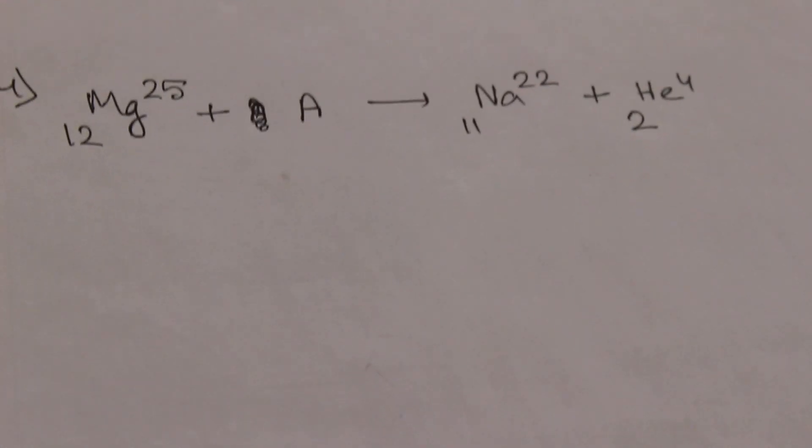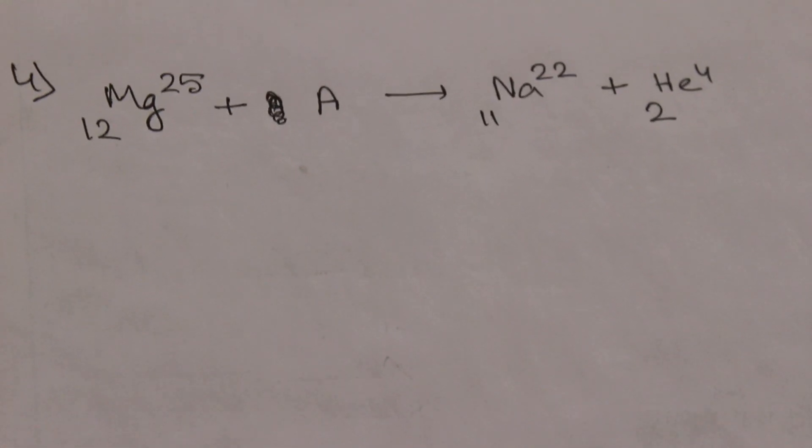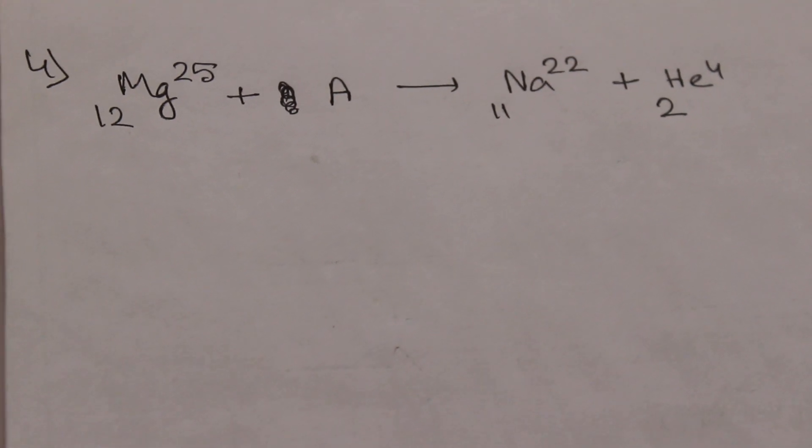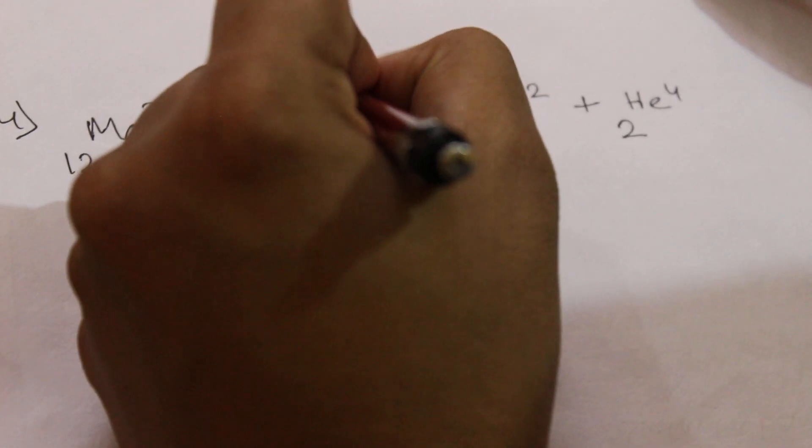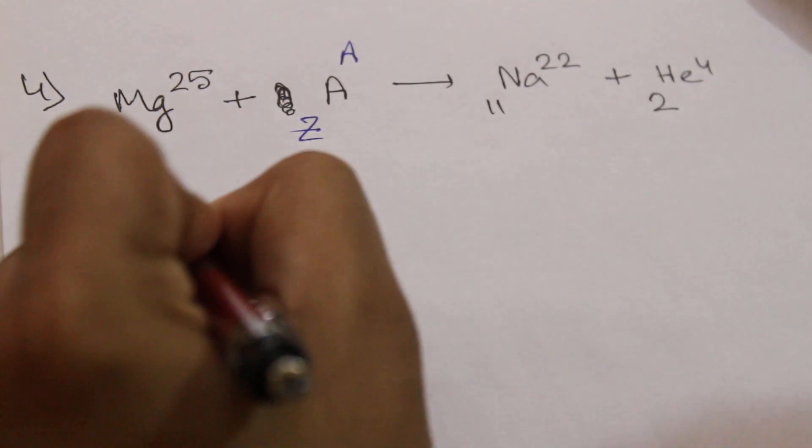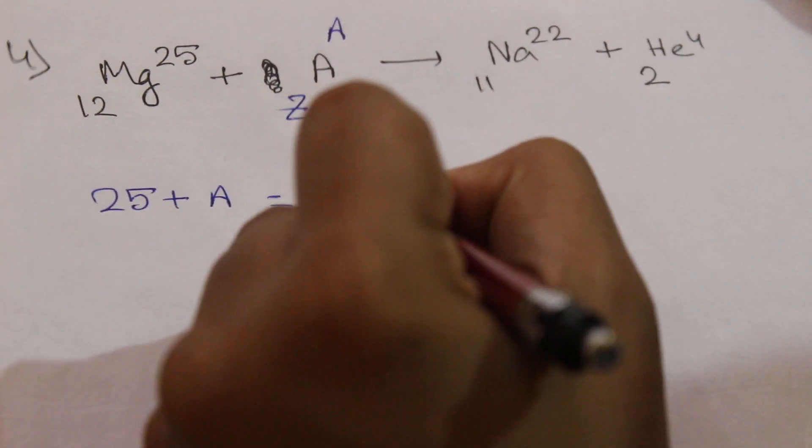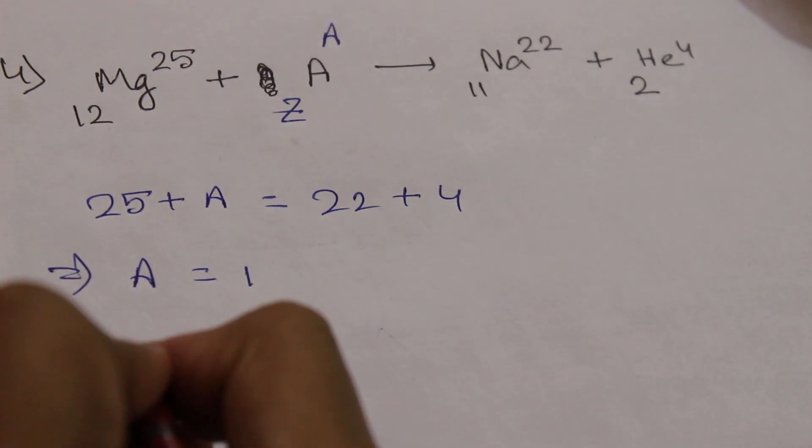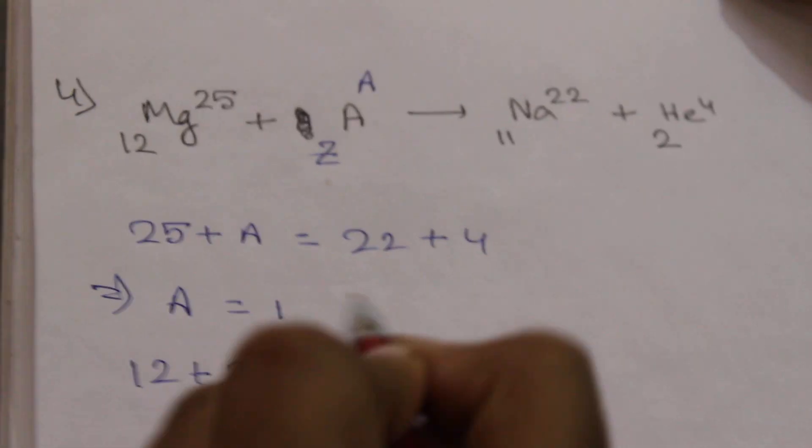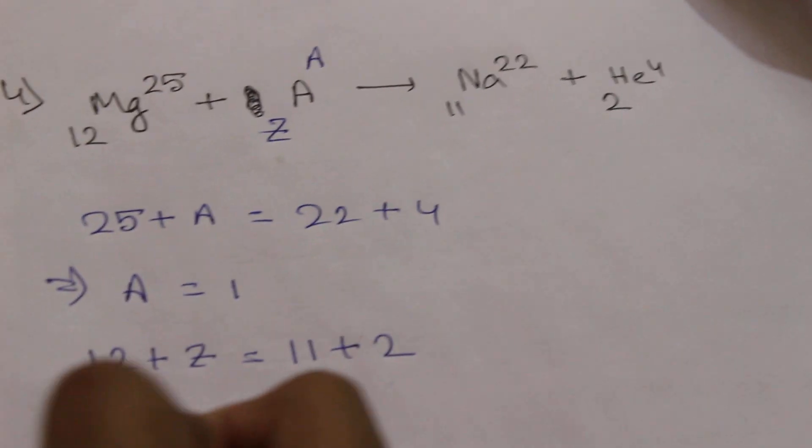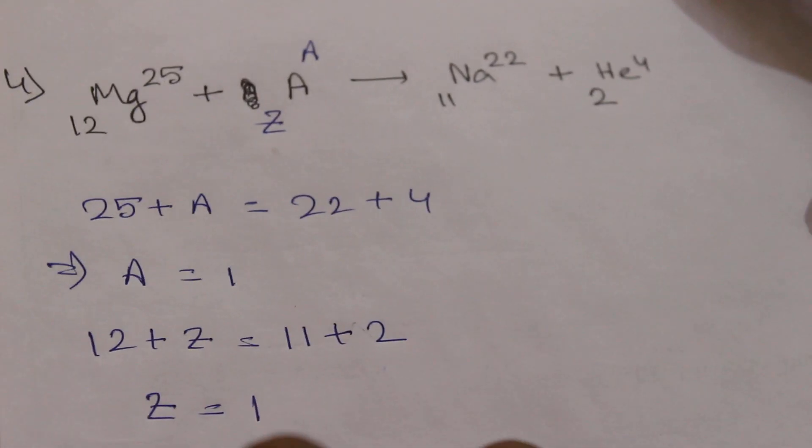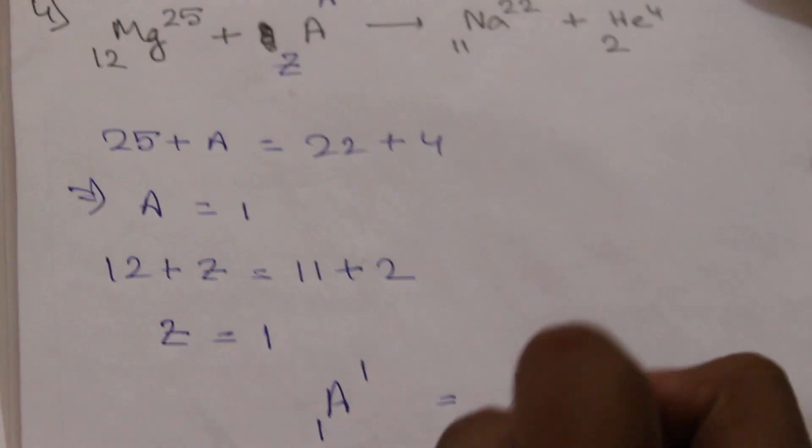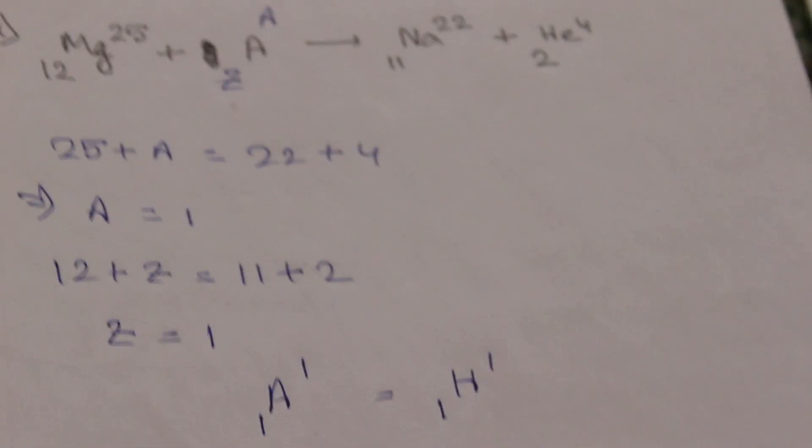This is our last example. Mg-25/12 plus A equal to Na-22/11 plus He-4/2. So we will again write this as A and Z. So 25 plus A is equal to 22 plus 4, so A is 1. And 12 plus Z is equal to 11 plus 2, so Z is equal to 1. So A element is 1/1, that is equal to hydrogen atom. Understood?